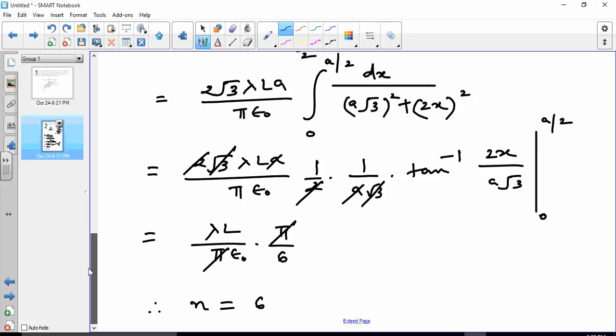And then we are able to get this result for flux. And therefore n is equal to 6.